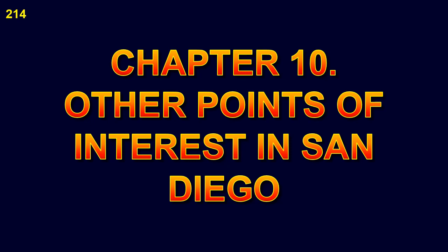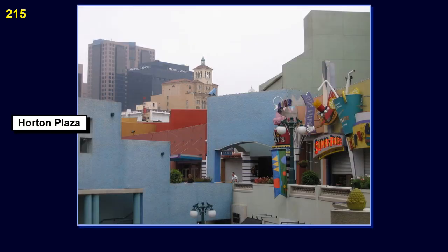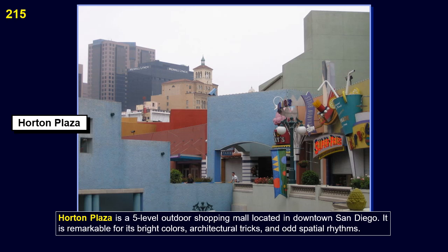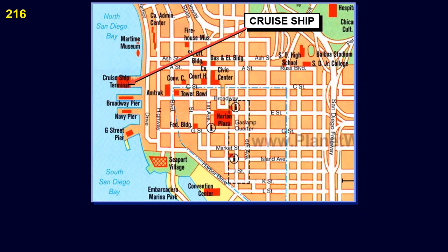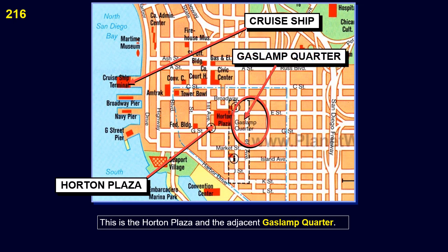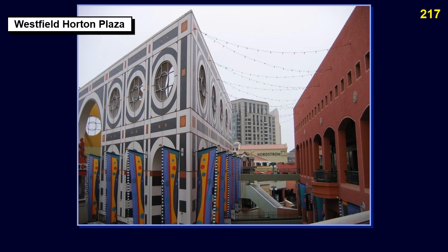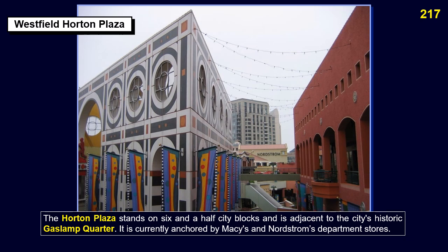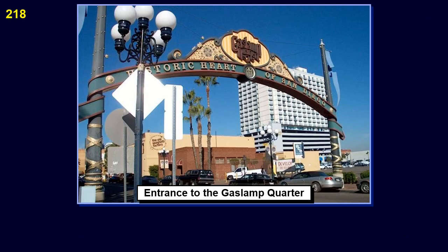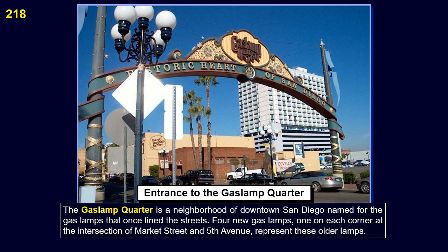Chapter 10: Other Points of Interest in San Diego. Horton Plaza is a 5-level outdoor shopping mall located in downtown San Diego. It is remarkable for its bright colors, architectural tricks, and odd spatial rhythms. The Horton Plaza stands on six and a half city blocks and is adjacent to the city's historic Gaslamp Quarter. It is currently anchored by Macy's and Nordstrom's department stores. The Gaslamp Quarter is a neighborhood of downtown San Diego, named for the gas lamps that once lined the streets. Four new gas lamps — one on each corner at the intersection of Market Street and Fifth Avenue — represent these older lamps.